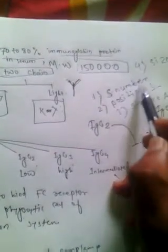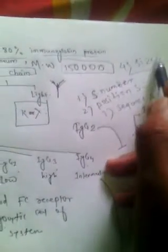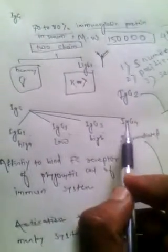It gets classified based on the number of disulfide bonds, position of disulfide bonds, sequence of amino acids, and variation in size. It is classified into four classes: IgG1, IgG2, IgG3, and IgG4.